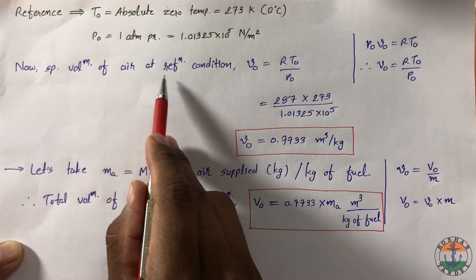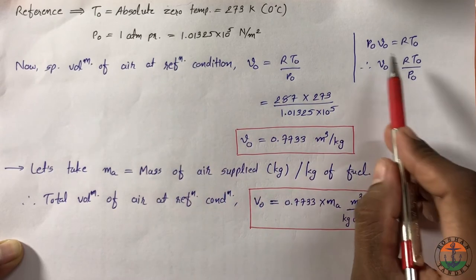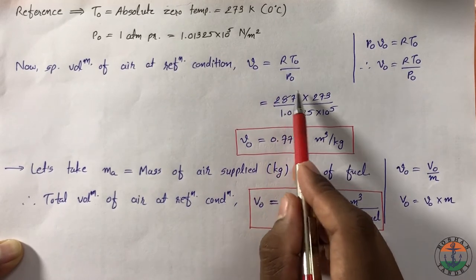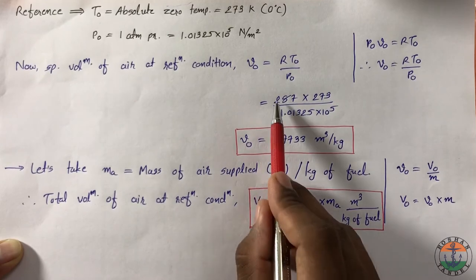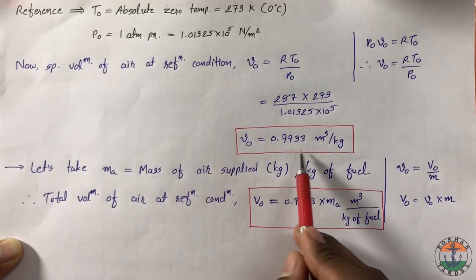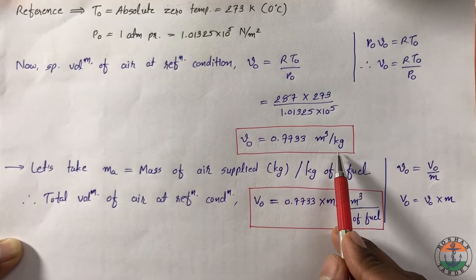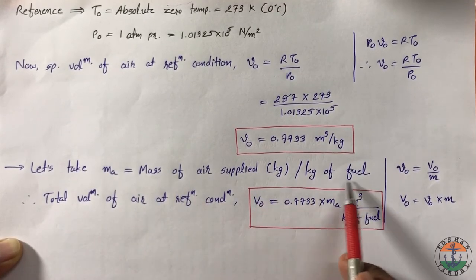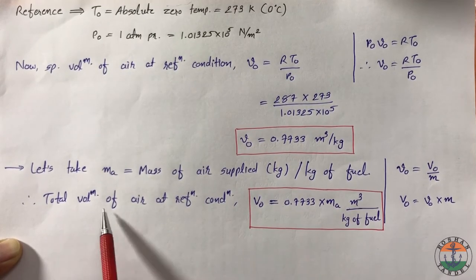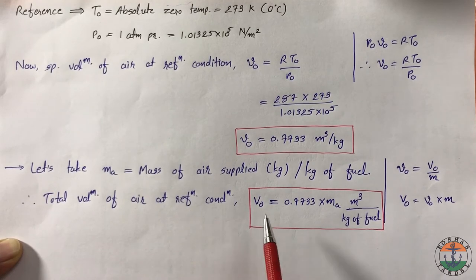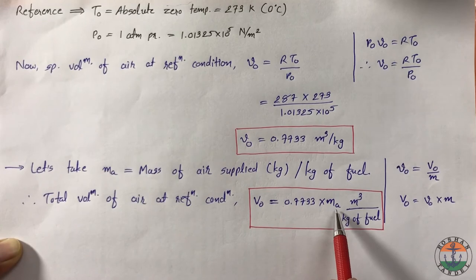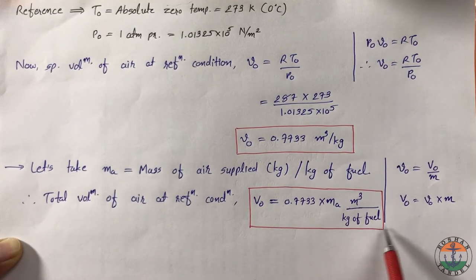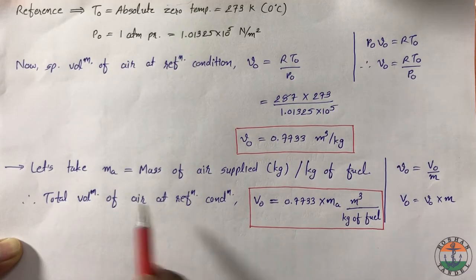The specific volume of air at this reference condition is found using PV = RT, where R equals 287 for air. Putting all values gives V0 in m³/kg. If Ma equals the mass of air supplied per kg of fuel, then total volume of air at reference condition becomes specific volume times mass of air, with units of m³ per kg of fuel.